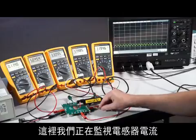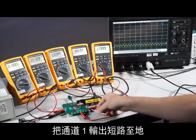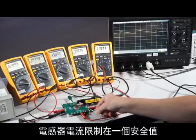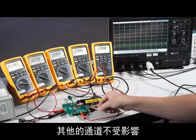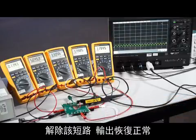Here we're monitoring inductor current. Shorting channel 1 output to ground results in a dramatic drop in operating frequency, and the inductor current limiting at a safe value. The other channels are not affected. Release the short and the output returns to normal.